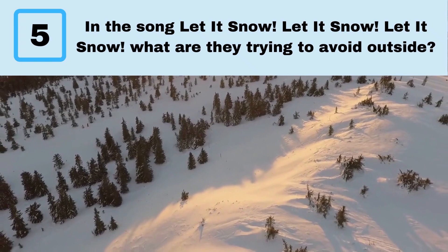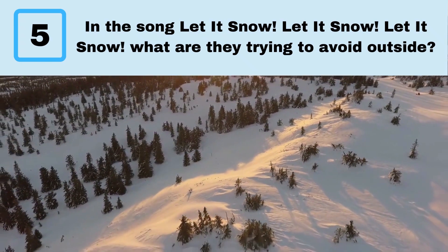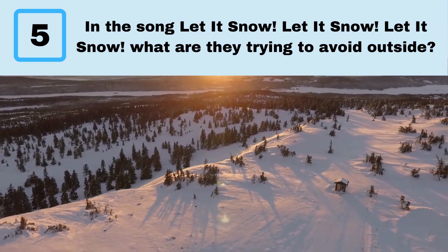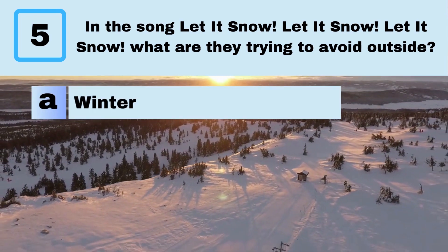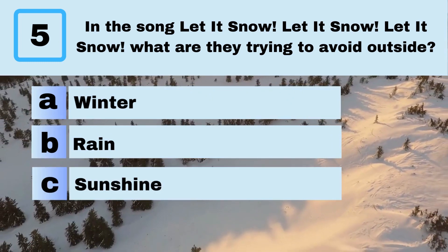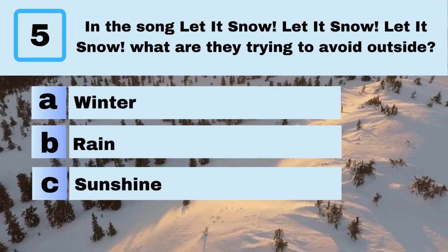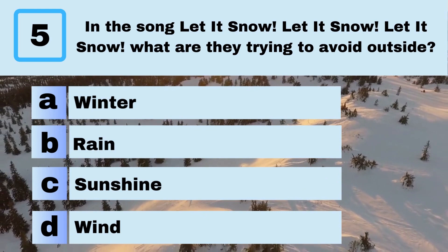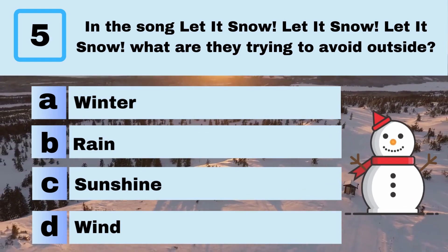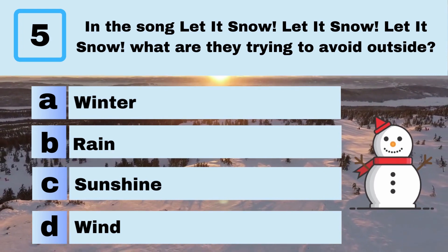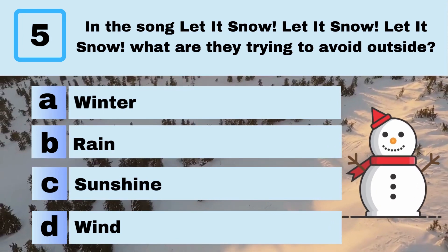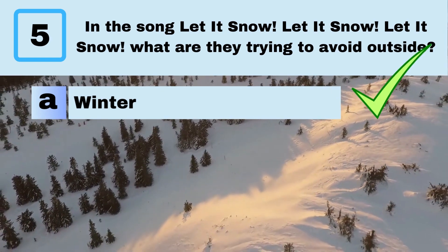Question 5. In the song "Let It Snow, Let It Snow, Let It Snow," what are they trying to avoid outside? A. Winter. B. Rain. C. Sunshine. D. Wind. Answer: A. Winter.